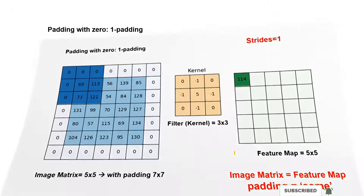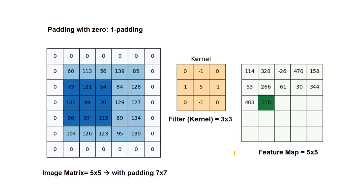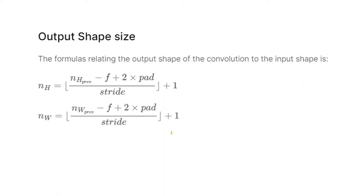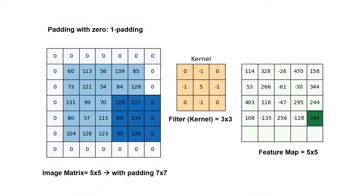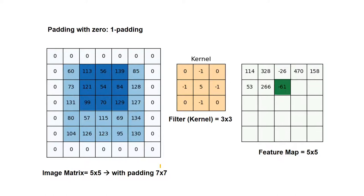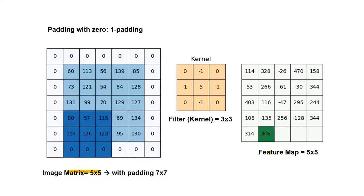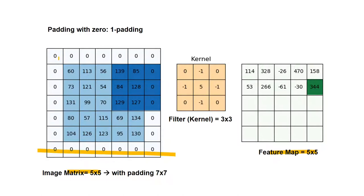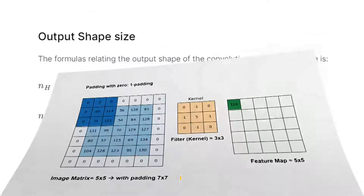You can calculate output height and width using formulas, but rather than memorizing them: if you use padding 'same', the result will be the same size as the input image matrix. If you use padding 'valid', no padding is added and the output will be smaller. That's the whole idea in Keras's two-dimensional convolution.